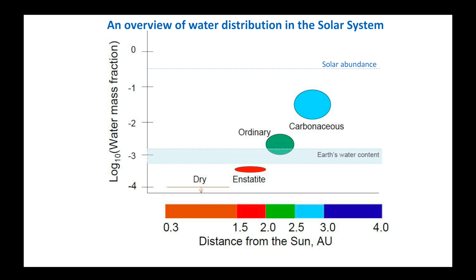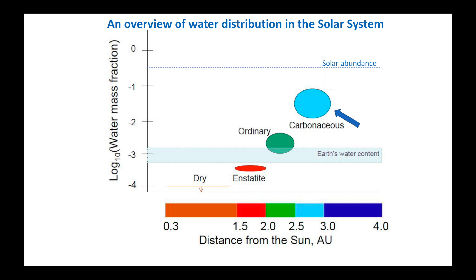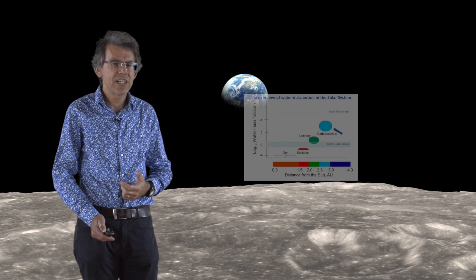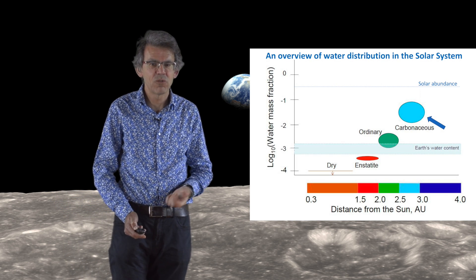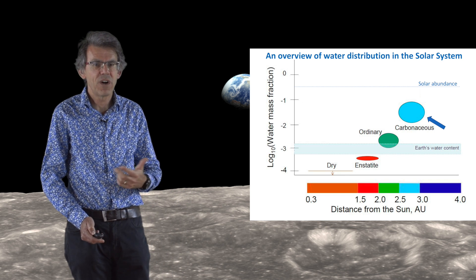We receive from the asteroid belt several kinds of meteorites. Some of them, called carbonaceous chondrites, contain quite a significant amount of water. Several percent of their mass is made of water, and these meteorites come from carbonaceous asteroids primarily located in the outer asteroid belt between 2.5 and 3 AU.